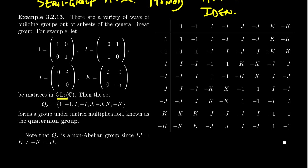We're going to take the eight matrices: the identity and negative 1 times the identity; I and also negative I (so we scale the matrix I by negative 1); the matrix J and negative J (which looks like [0, -i; -i, 0]); and then K and negative K. We take these eight matrices and claim that together, using the usual notion of matrix multiplication, they form a group.